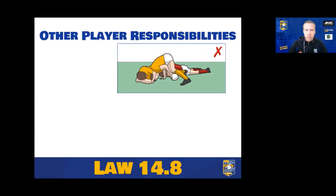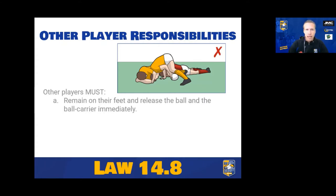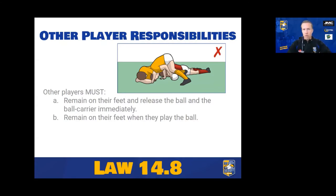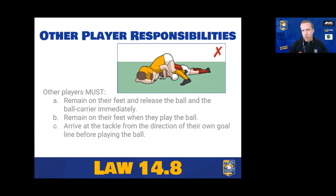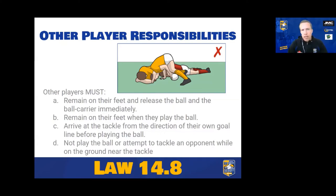Other players at the breakdown: arriving players need to remain on their feet and release the ball and the ball carrier — that could be a tackle assist. Players playing the ball must remain on their feet, meaning not supporting themselves with the ground or other players. They need to arrive at the tackle from the direction of their own goal line. Players on the ground can't play the ball or attempt to tackle an opponent — they are out of the game and must move away from everything or not impact on it, so that players on their feet have the opportunity to play the game.